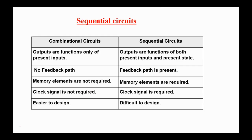Here is a comparison table between combinational circuits and sequential circuits. In combinational circuits, outputs are functions only of the present inputs, while in sequential circuits outputs are functions of both present inputs and present state. Combinational circuits have no feedback, no memory elements, and no clock signal, while sequential circuits require all of these. Usually sequential circuits are more difficult to design.